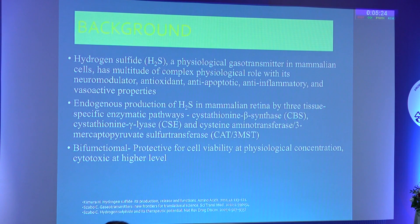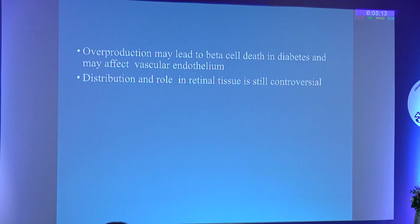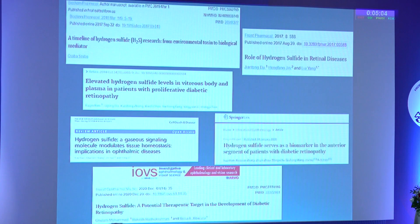It has a bifunctional role: unlike other gasotransmitters, it has a protective role at physiological levels, whereas it is cytotoxic at higher levels. Overproduction may lead to beta cell death in diabetes and may affect vascular neurons. Its distribution and role in retinal tissue is still controversial. There is existing literature, though there are very few studies in human eyes, and no study comparing H2S levels in different severities of diabetic retinopathy.